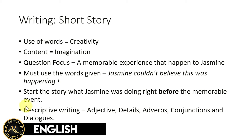First of all, you need to make sure that you're able to start the story — what Jasmine was doing right before the memorable event. This is practically descriptive writing. If it's descriptive writing, what is best to use here is: you need to use adjectives, provide details, write adverbs, conjunctions, and dialogues. These are the necessities that you would need to write. I'm not going to show you exactly what sentence to write — I'm just going to give you a couple of ideas of how to do so.